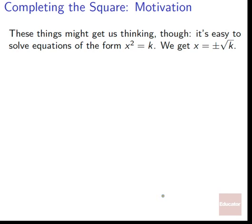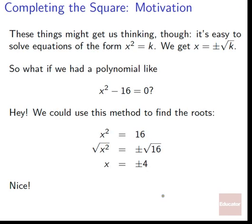These things get us thinking — it's easy to solve equations in the form x² = k, since we get x = ±√k. If we could somehow get a quadratic to look like that, we'd be doing well. For example, x² − 16 = 0 is really easy: we toss the 16 over, get x² = 16, take the square root of both sides to get x = ±4. This worked easily for x² − k = 0 because we just move k over and take the square root.